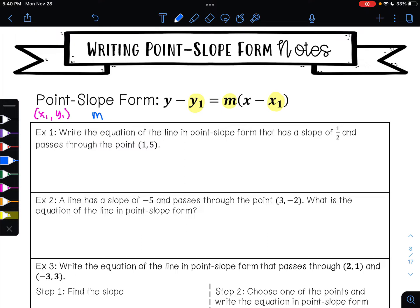So on example one, it says write the equation of the line in point-slope form that has a slope of 1/2 and passes through the point (1,5). Our slope of 1/2, that means m is 1/2. The point (1,5), remember points are x, y, so this is x₁ and 5 is y₁. So all we're going to do is plug into point-slope form. Again, that's y minus y₁ equals m times x minus x₁.